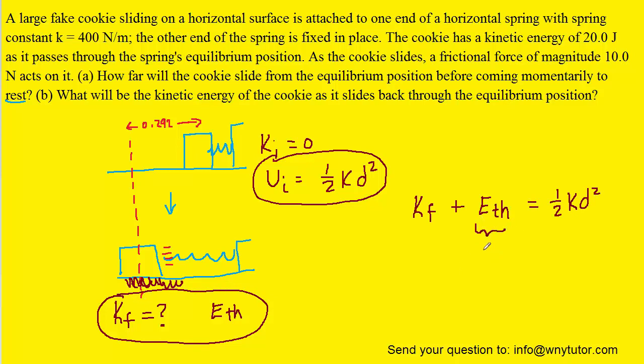As before, we will replace the thermal energy with the frictional force multiplied by the distance. And then since we're trying to calculate the final kinetic energy, we can subtract the frictional force times d term over to the other side.